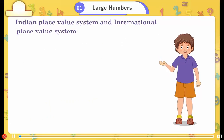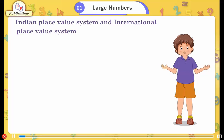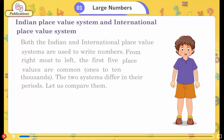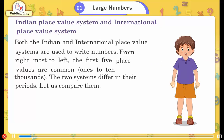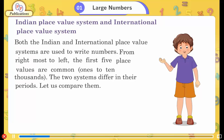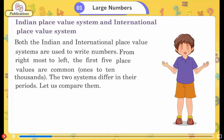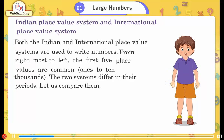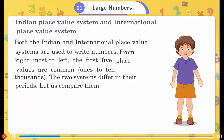Indian place value system and international place value system. Both the Indian and international place value systems are used to write numbers. From the rightmost digit to the left, the first 5 place values are common — ones to ten thousands. The two systems differ in their periods beyond that. Let us compare them.